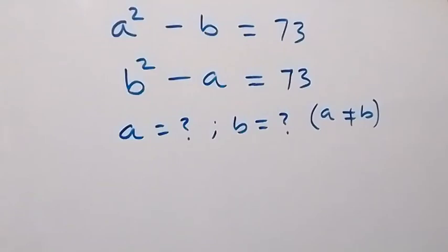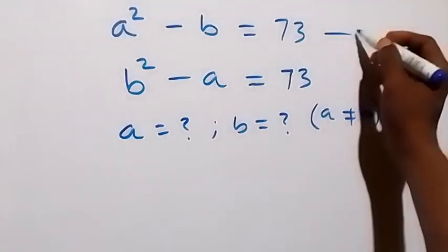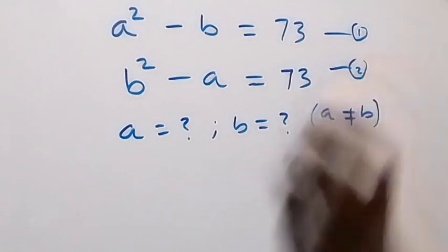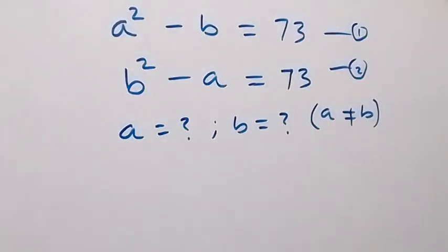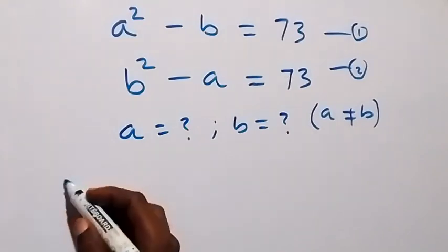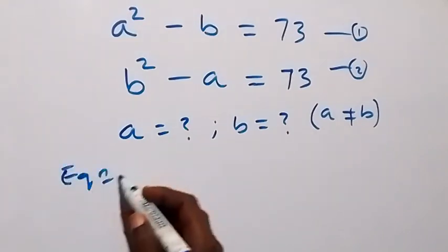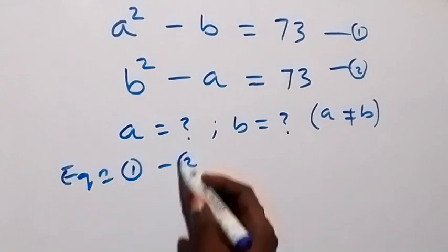Hello, welcome. How to solve this nice algebra system of equations. Let's label this as equation 1 and this as equation 2. To find the value of a and b, where a is not equal to b. Subtract equation 2 from equation 1, that is equation 1 minus 2.